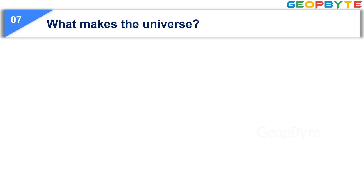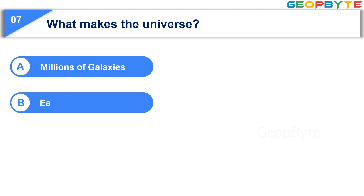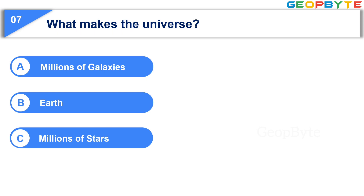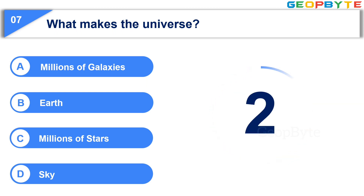What makes the universe? Option A: Millions of galaxies. Option B: Earth. Option C: Millions of stars. Your time starts now. The correct answer is Option A: Millions of galaxies.